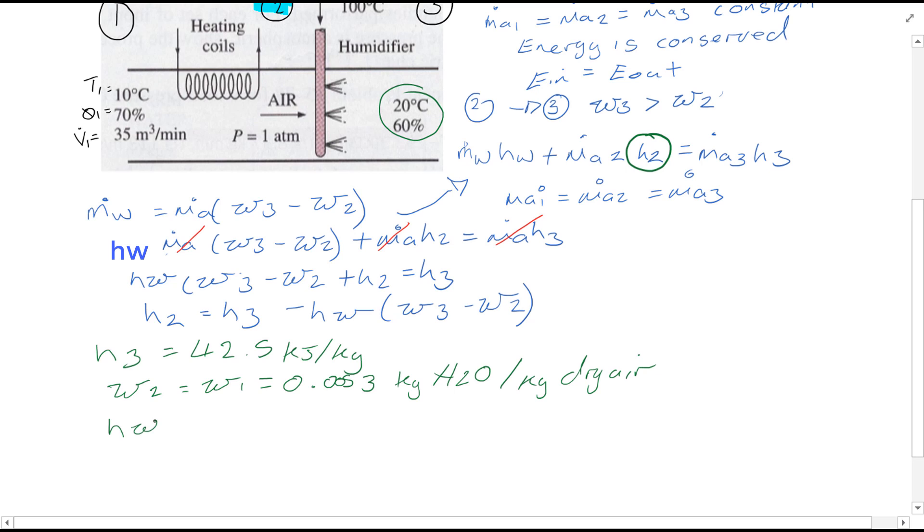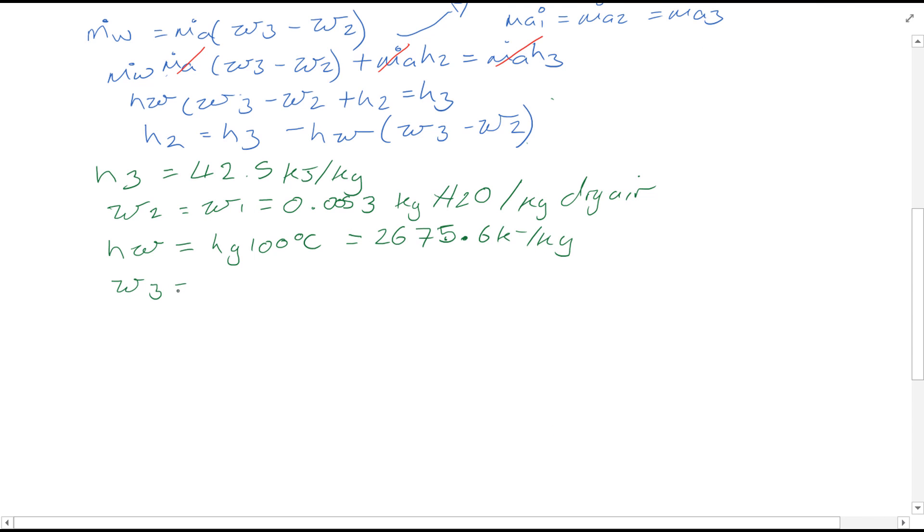So we've got H3 which is equal to 0.053. Hence, as a result, Hw from saturated temperature tables, Hw at Hg at 100 degrees is equal to 2675.6 kJ per kg.